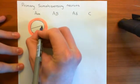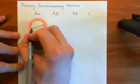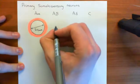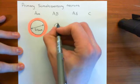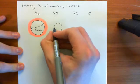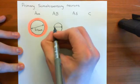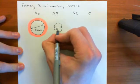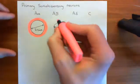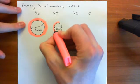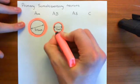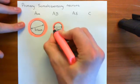These A-alpha neurons have a diameter of around 20 micrometres. A-beta are very similar to A-alpha but they're around half the size — their diameters are generally around 10 micrometres. They too are covered in myelin, shown here in red — this is the myelin sheath that covers the A-beta neurons.